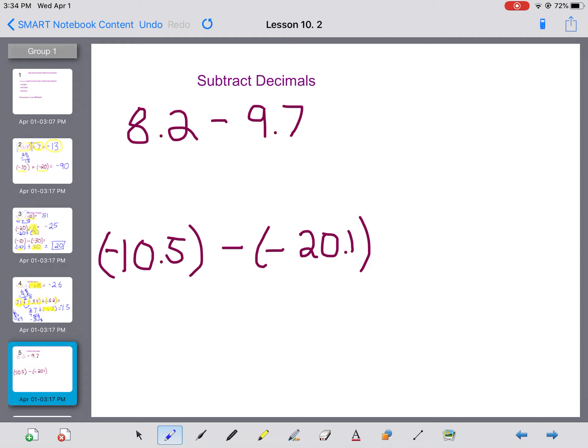All right. Subtracting decimals. Here we go. We have 8.2 take away 9.7. If I want, what I can do because it's subtraction is I can actually do 8.2 plus, leave, switch, switch, negative 9.7. So I still end up finding the difference between those two numbers. What's the difference between 9.7 and 8.2? The difference is 1.5.